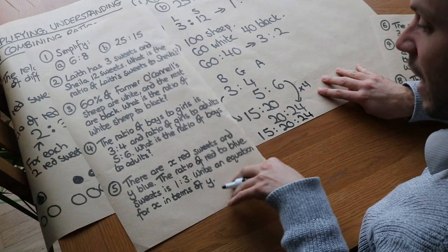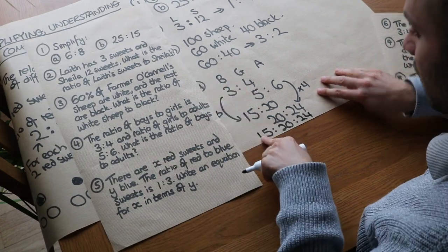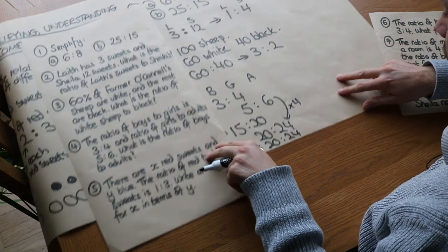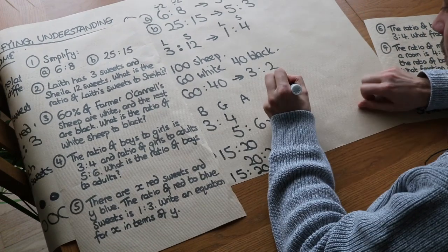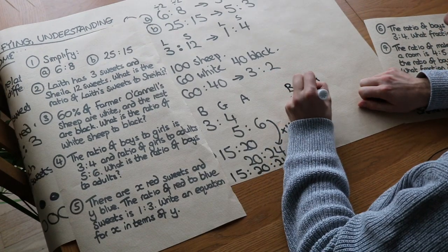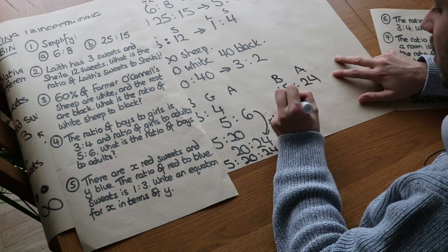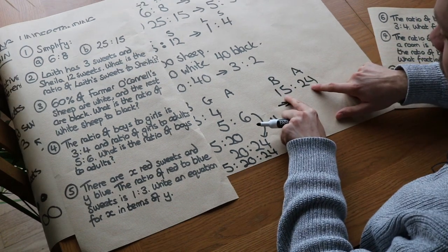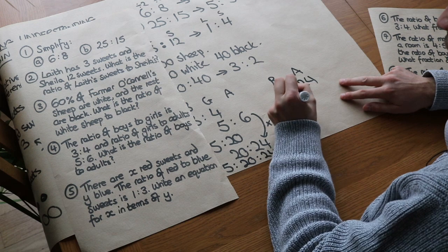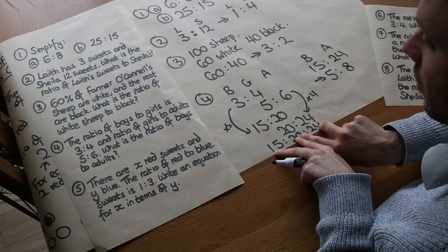So the ratio of boys to adults is 15 to 24. You could simplify that ratio because they both divide by 3: the 15 becomes 5 and the 24 becomes 8. So boys to adults is 5 to 8.